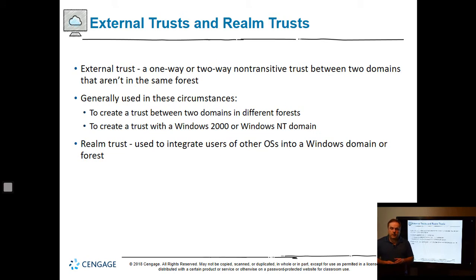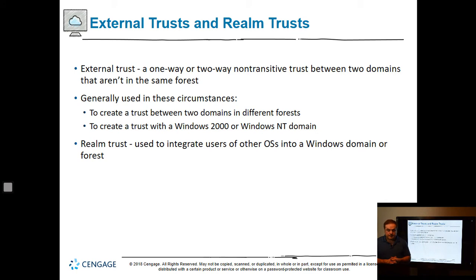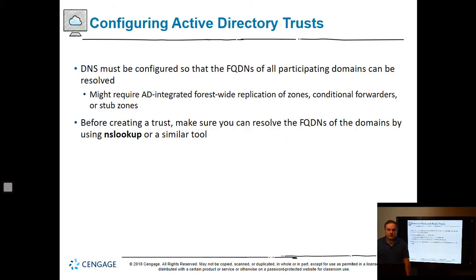External trusts are one-way or two-way non-transitive trusts between two domains that aren't in the same forest. These are used when you want to create a trust between two domains in different forests, to create a trust with a Windows 2000 or NT domain, or as a realm trust to integrate users of other operating systems. In a non-transitive trust, if A trusts B and B trusts C, that transitivity doesn't happen — C is going to have to have its own trust set up.